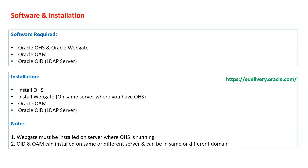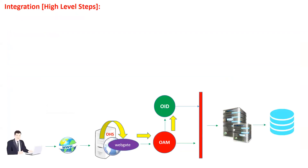OID and OAM can be installed on the same or different servers, and in the same or different domains. They are independent software. In practice, OAM and OID are typically installed in separate domains. To recap the flow: a user accesses a website, the request goes to the OHS web server, WebGate intercepts it and forwards to OAM, and OAM forwards to OID for authentication.